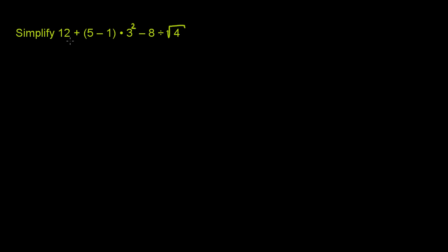We're asked to simplify 12 plus, then in parentheses, 5 minus 1, times 3 to the second power, or 3 squared, minus 8 divided by the square root — or really the principal root — of 4.